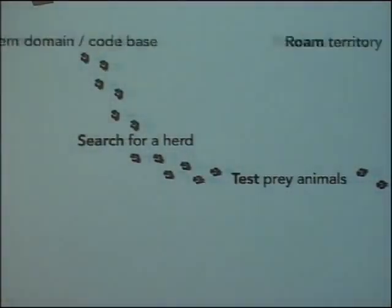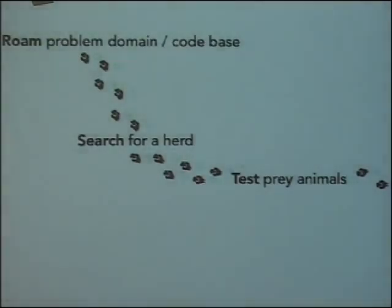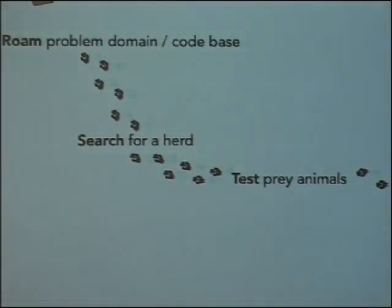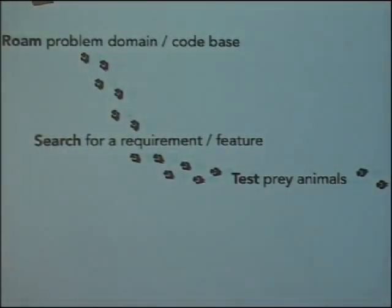This is the metaphor we've chosen to experiment with. Instead of roaming territory, these groups of programmers — we've played with six, eight, maybe ten — roam a problem domain or codebase. The territory represents the problem domain or code base we're working in, and you have these packs roaming within this space. The equivalent of searching for a herd is searching for a requirement or feature to implement, based on user requirements — which one is closest, which looks like an easy target.